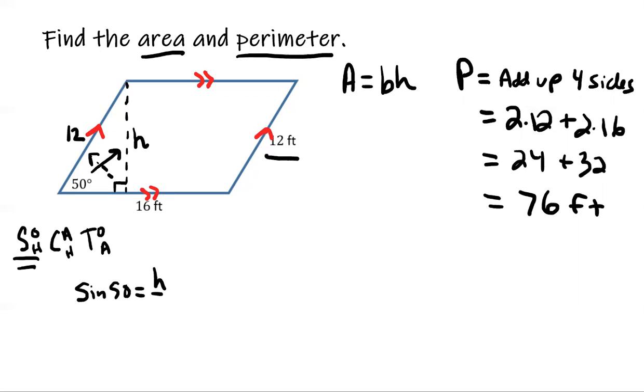Equals h over 12. I'm gonna multiply both sides by 12, 12s are going to cancel over here, I have my h and that's going to do it. I'm going to do 12 times sine of 50, and if I punch that into my calculator, 12 sine 50.